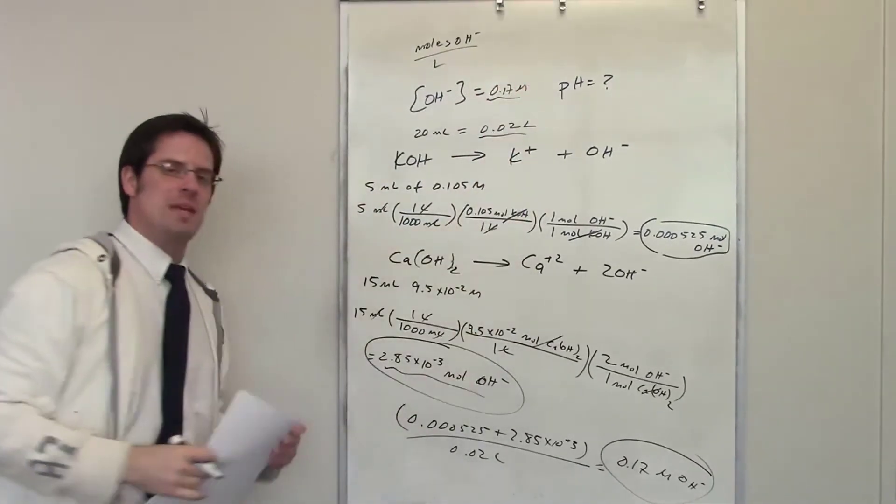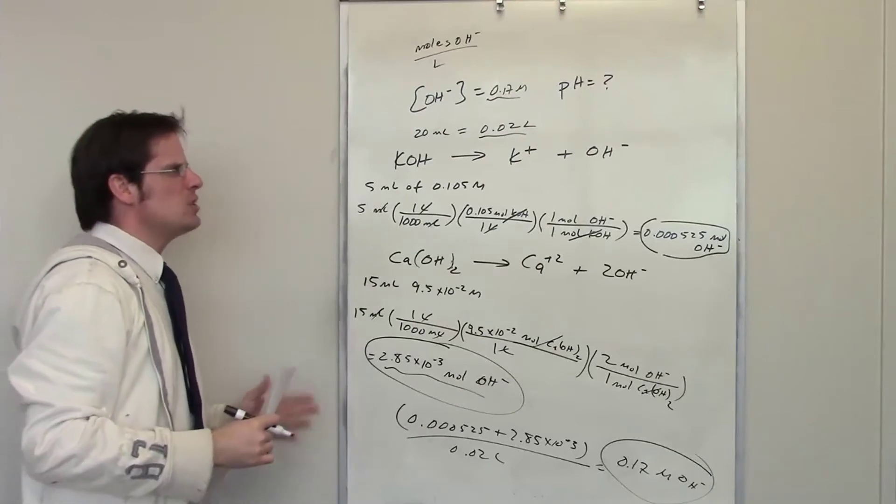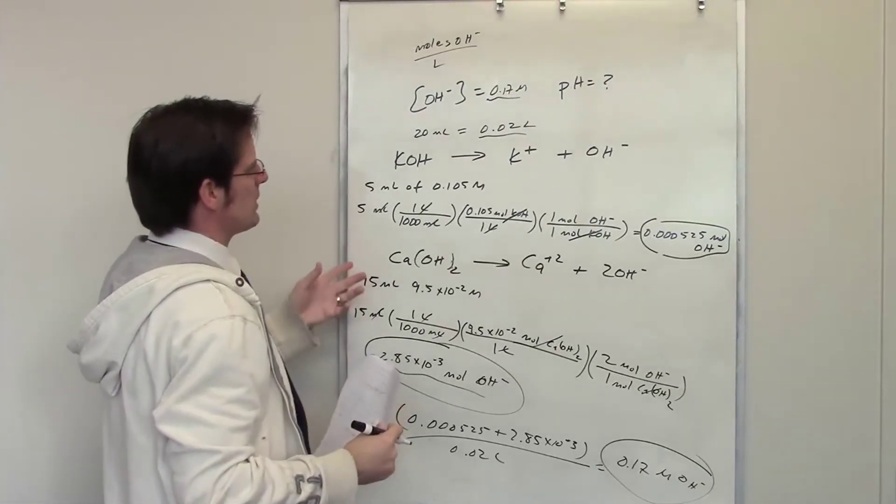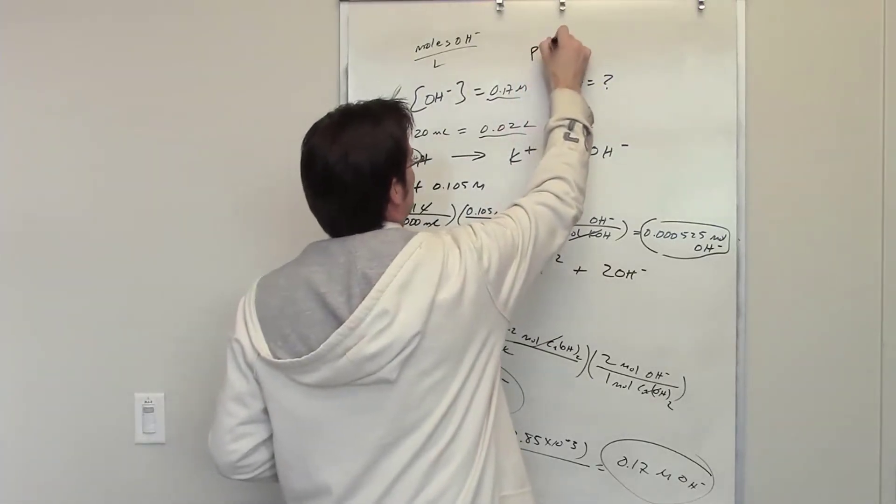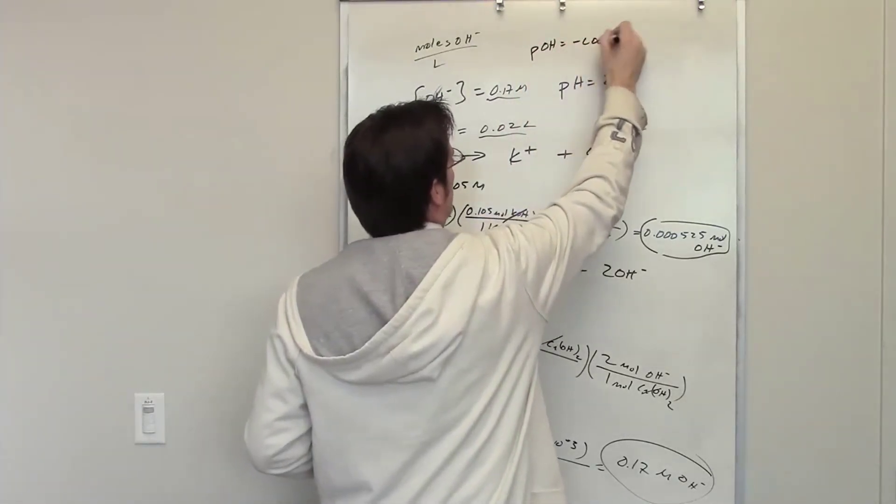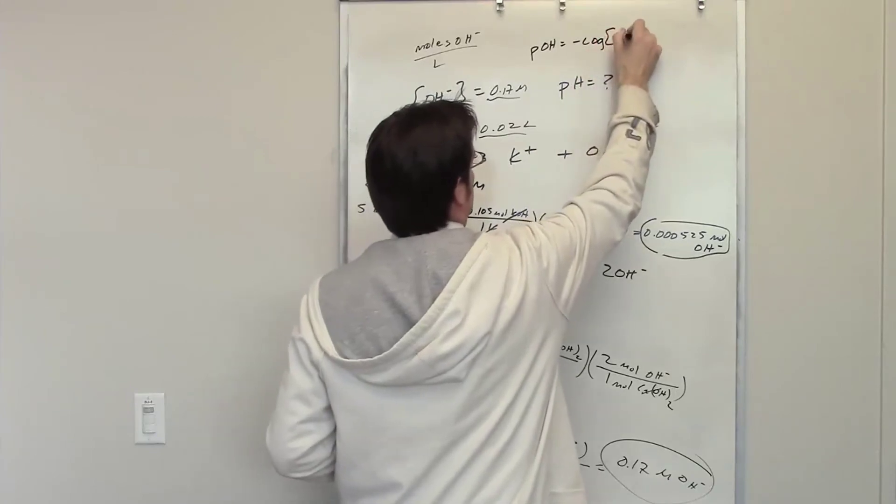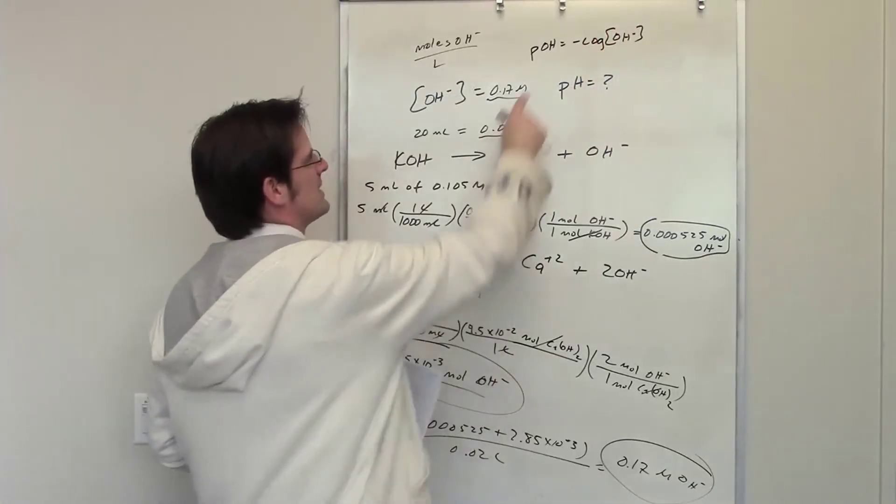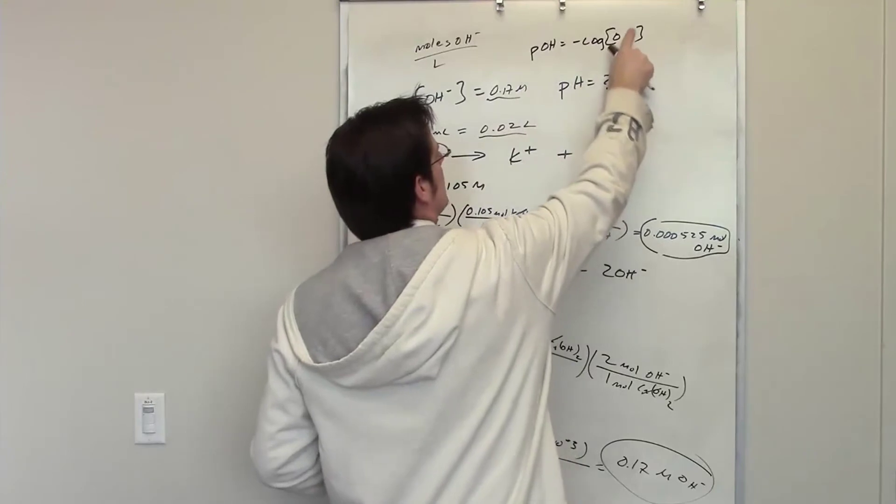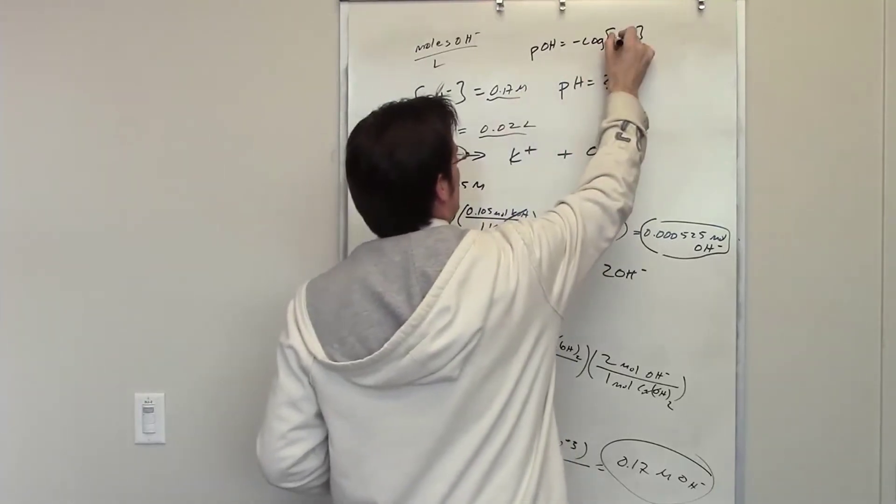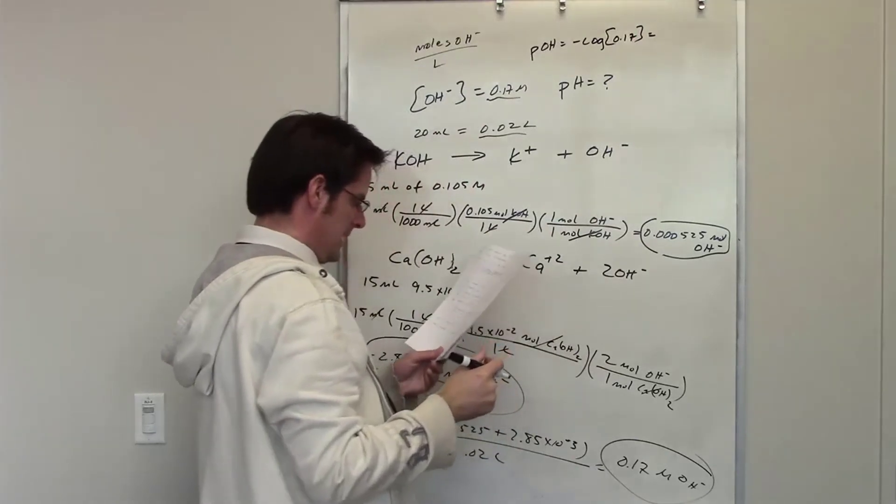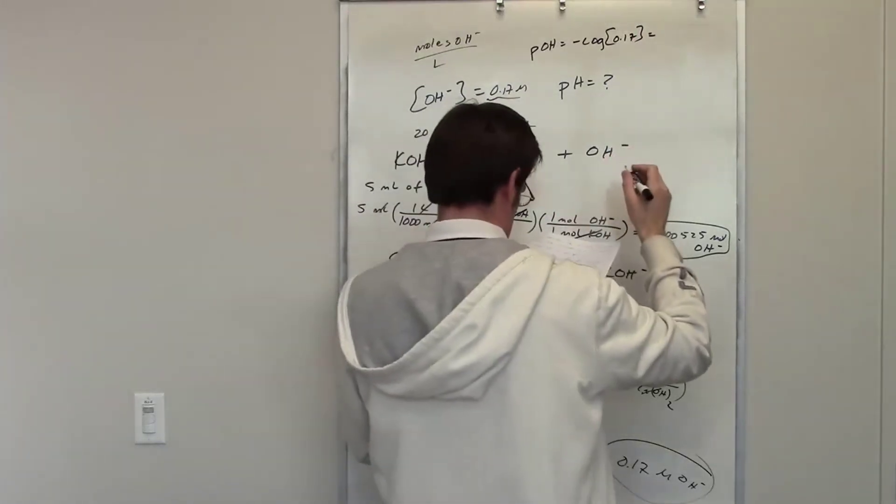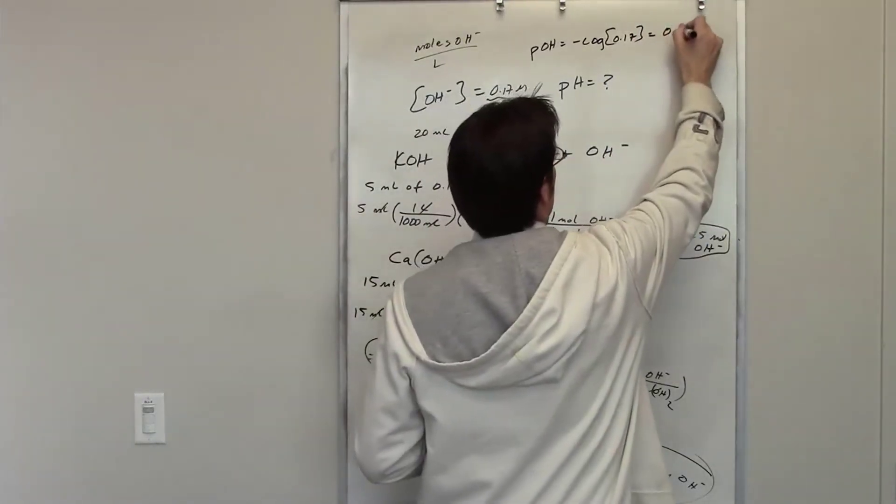Now it asks me for the pH. How can I do that from hydroxide? Well, you might remember me saying that pOH is equal to the negative log of the hydroxide ion concentration. In other words, I can calculate pOH by putting in this number right here, 0.17. I throw that into my calculator, the pOH ends up being 0.772.